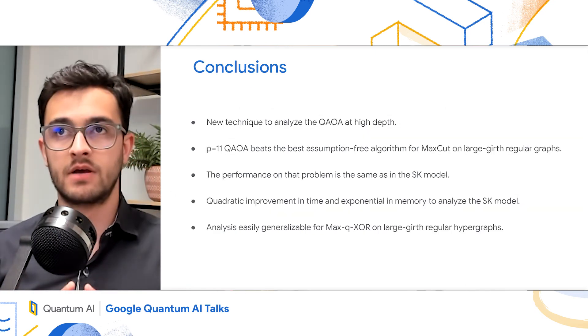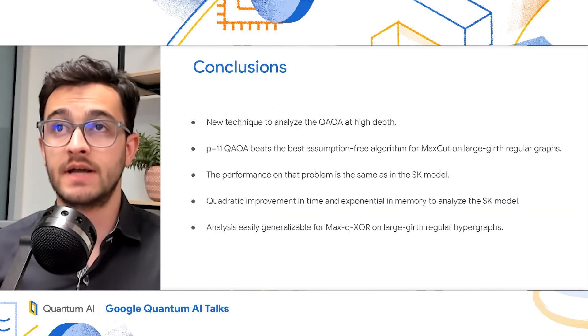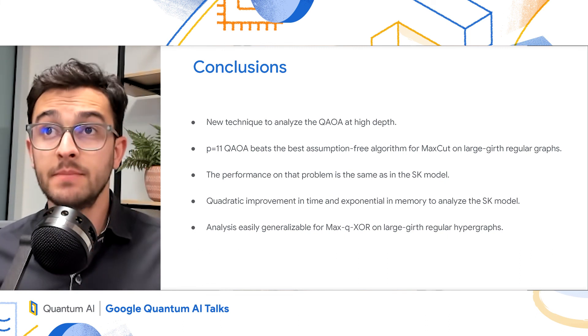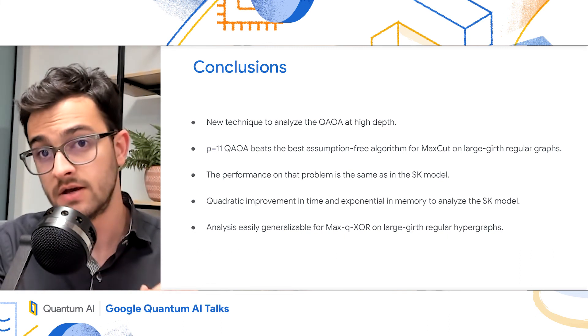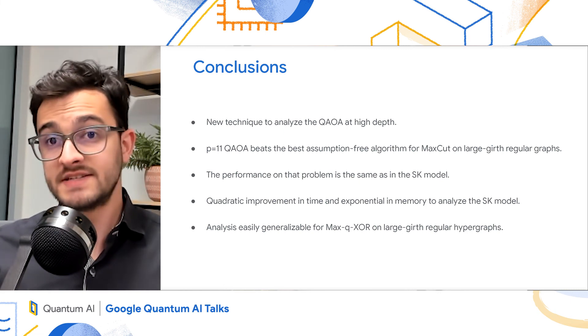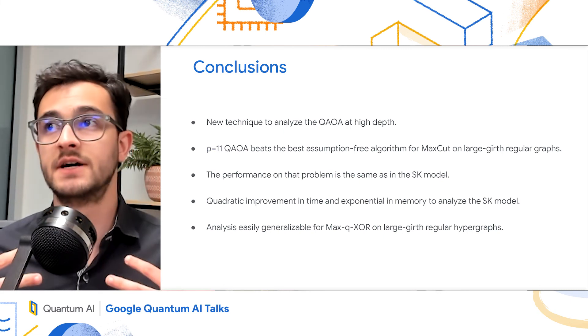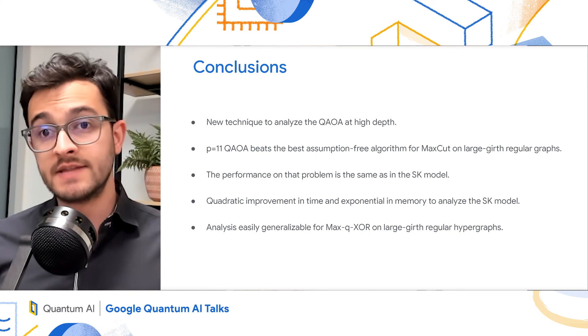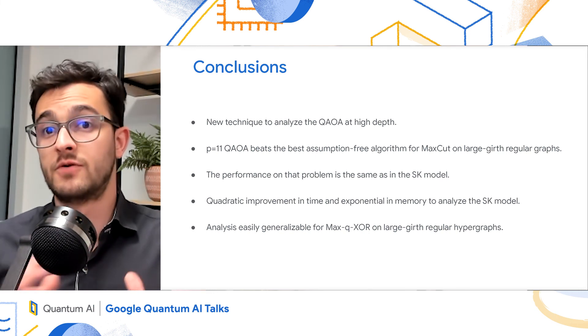And to conclude, we gave a new technique to analyze the QAOA at high depth. We showed that the p equals 11 and greater QAOA is the best assumption-free algorithm for MaxCut on large-girth regular graphs. It turns out that the performance on that problem is the same as the performance on the SK model.